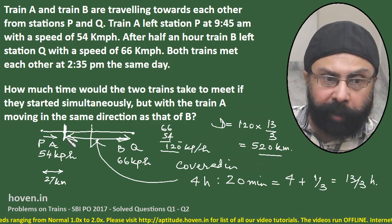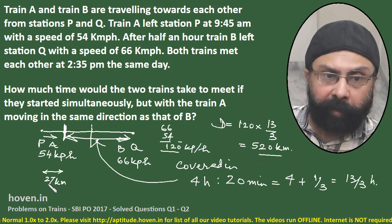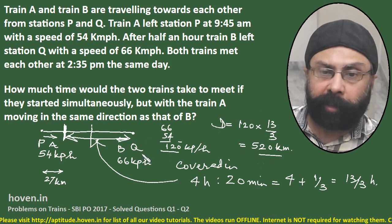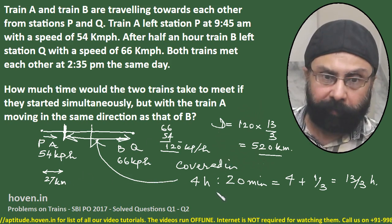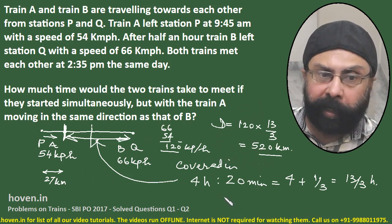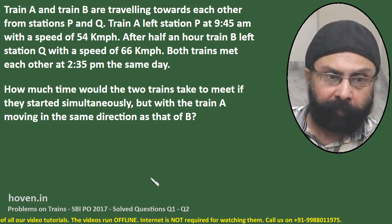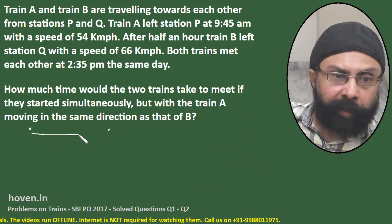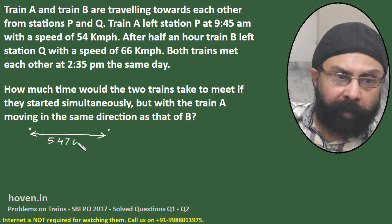To this 520 km, we add the 27 km that train A had already covered before B started. So the total distance between P and Q is 547 km.